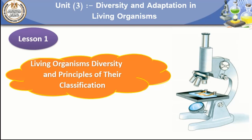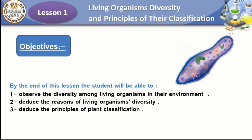Lesson number one talks about living organisms' diversity and the principles of their classification. The objectives we will cover: first, we will observe the diversity among living organisms in their environment. Second, we will deduce the reasons for living organisms' diversity — why living organisms are different from each other. Number three, we will use the principles of plant classification.